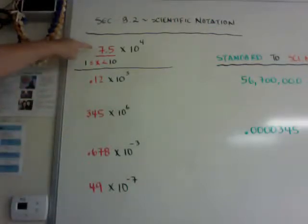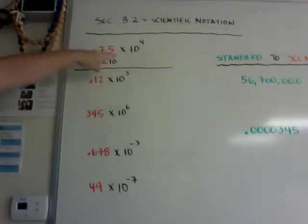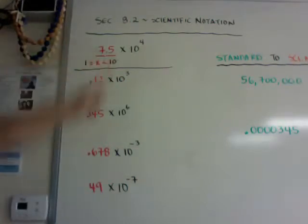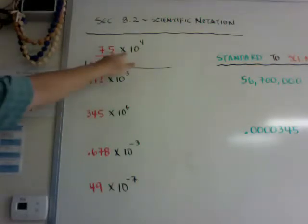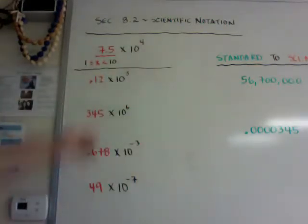Scientific notation, if you have 7.5 times 10 to the 4th, make sure this number here before the x is greater than or equal to 1 and less than 10. So it has to be between 1 and 10, but it can include 1. You can only have one number before the decimal. Be careful with all of our variables, this is a times sign, it's not the variable x. If you see a number times 10 to the power, you know that this is a times and not an x for a variable.